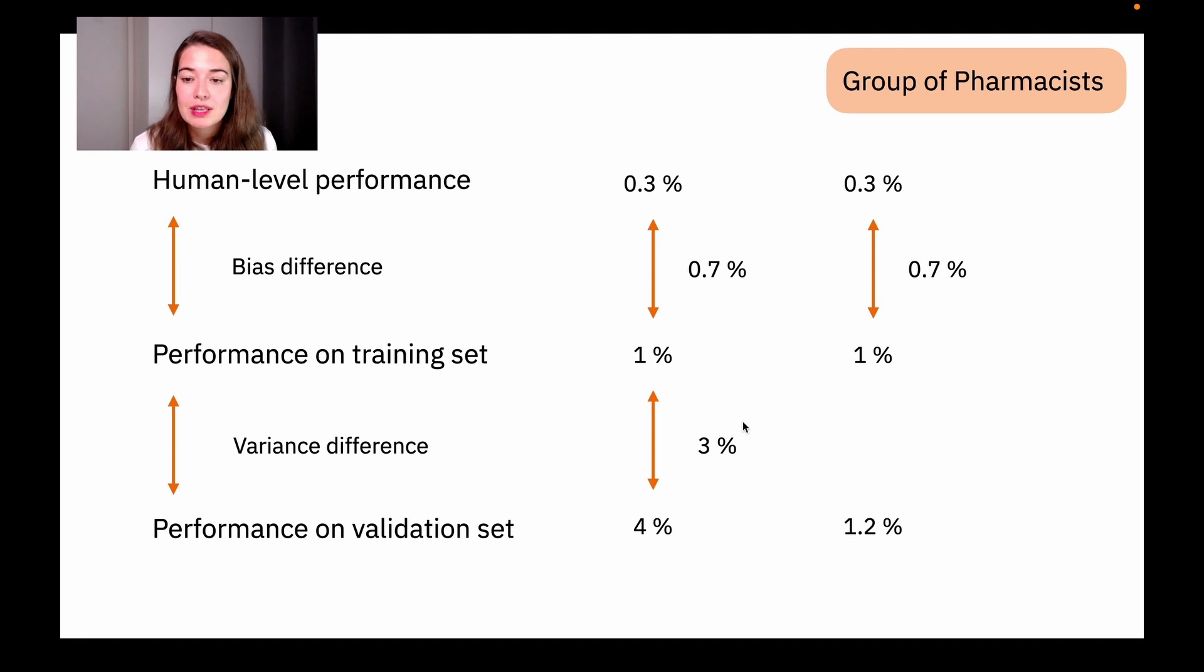Well, then the difference actually change. We have 0.7% performance difference and 0.2% performance difference for the variance difference.